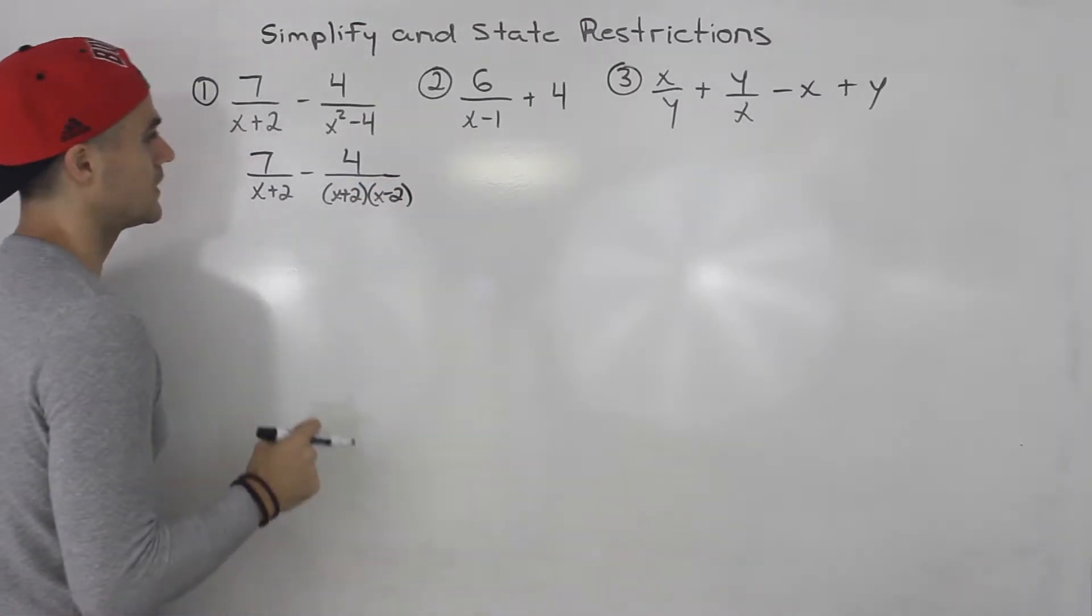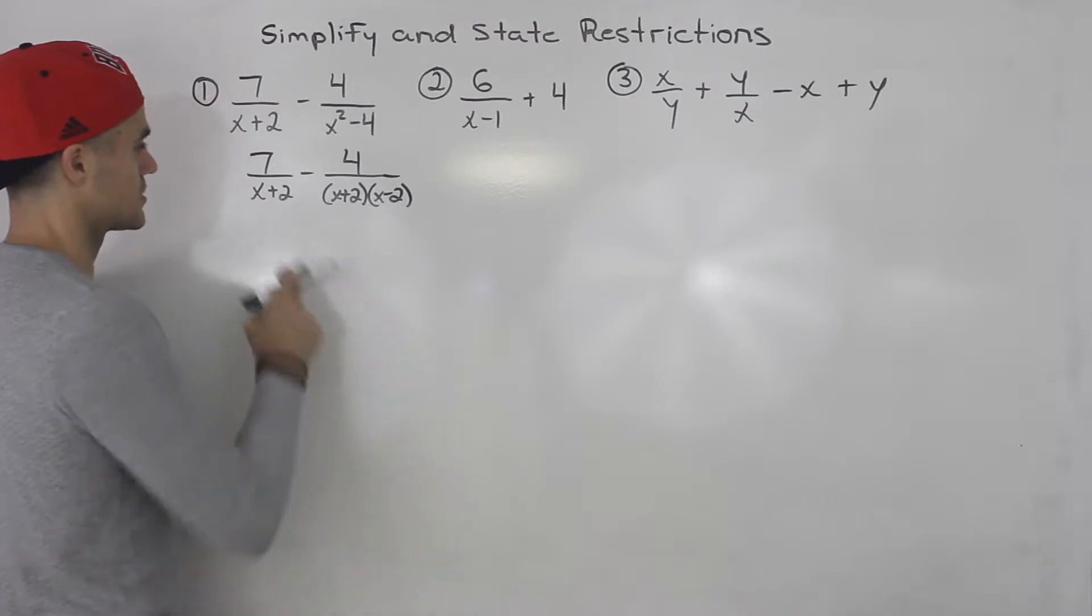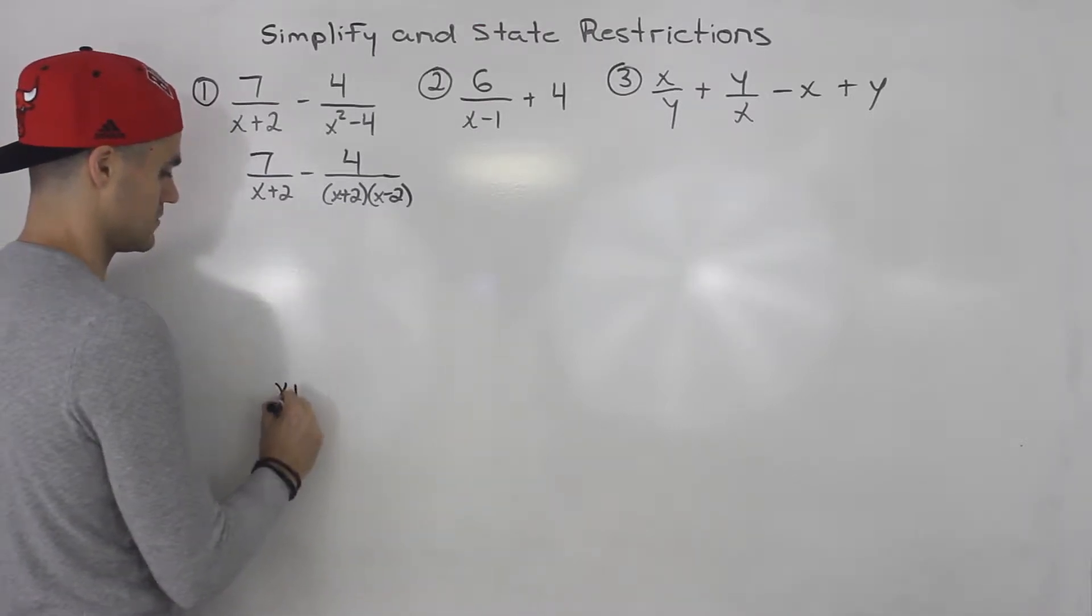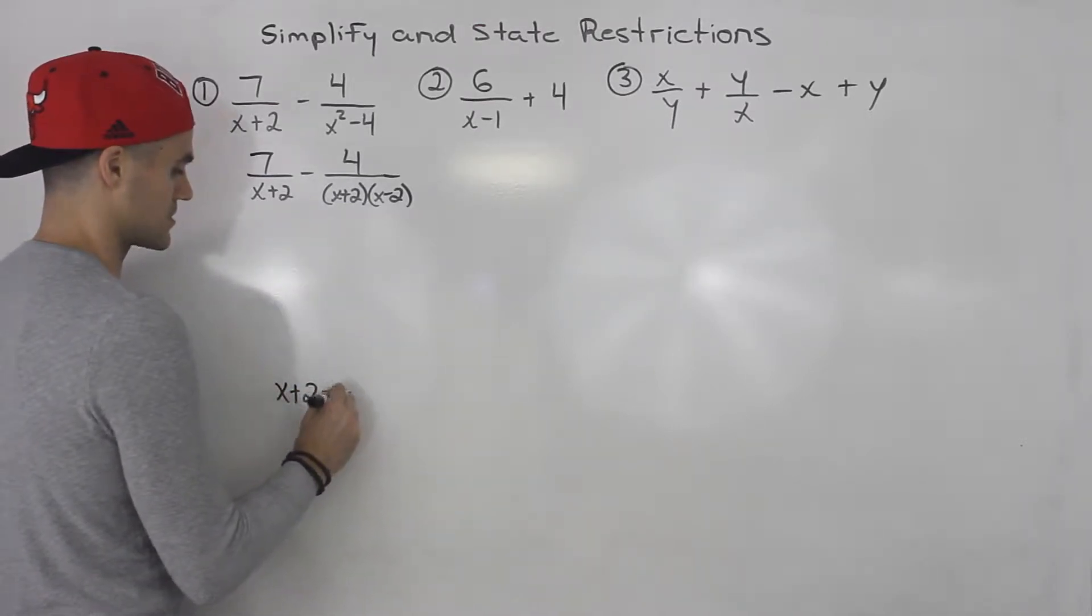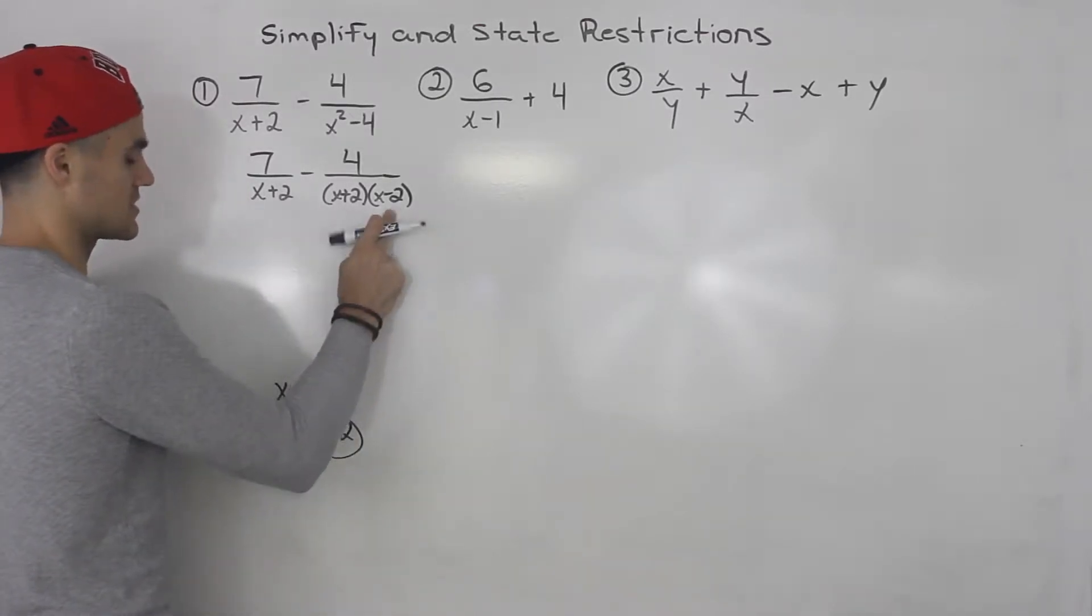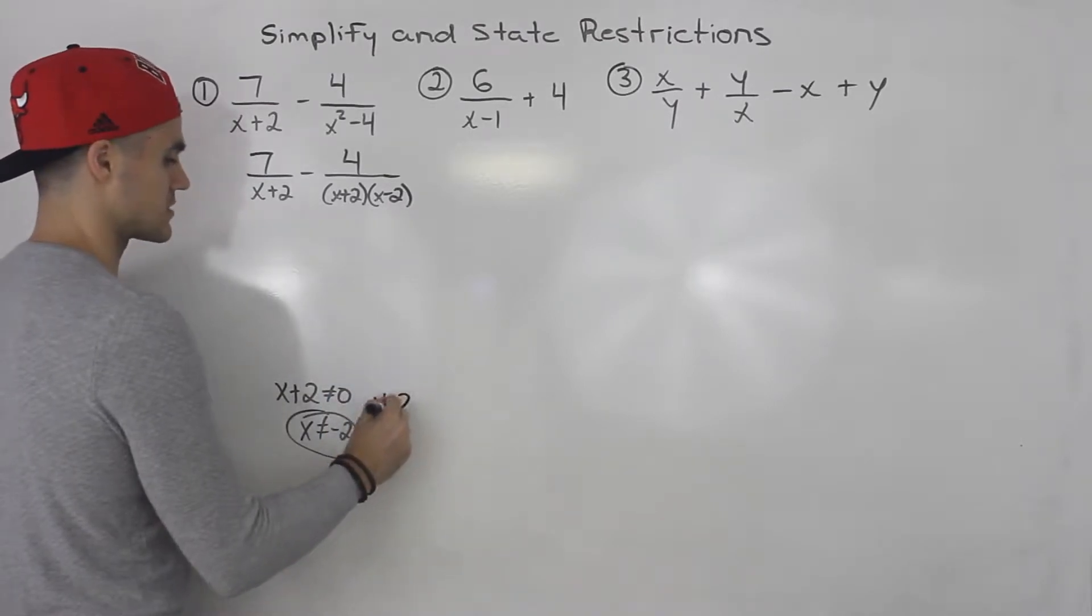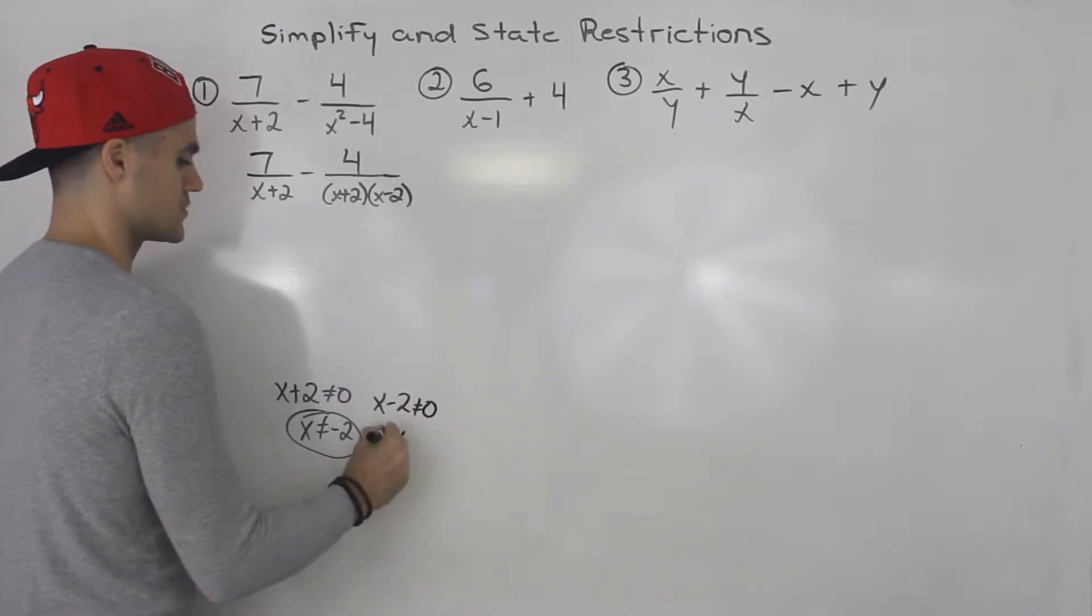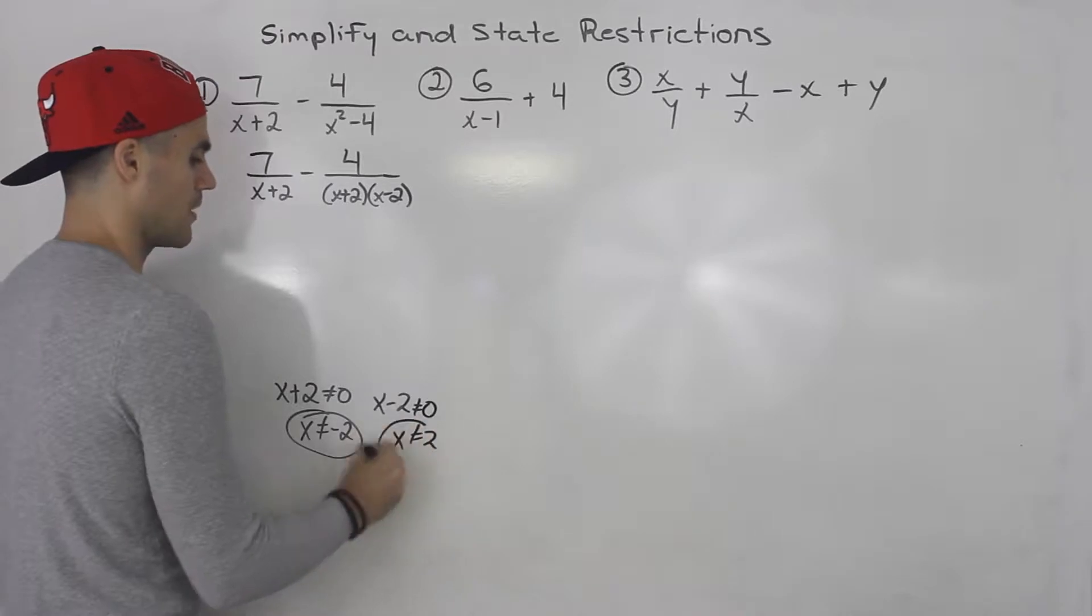Then from here we can state the restrictions. Notice x plus 2 can't equal 0, so that means x cannot equal negative 2. That's one of the restrictions. And then this factor here, x minus 2 cannot equal 0, which means x cannot equal positive 2.